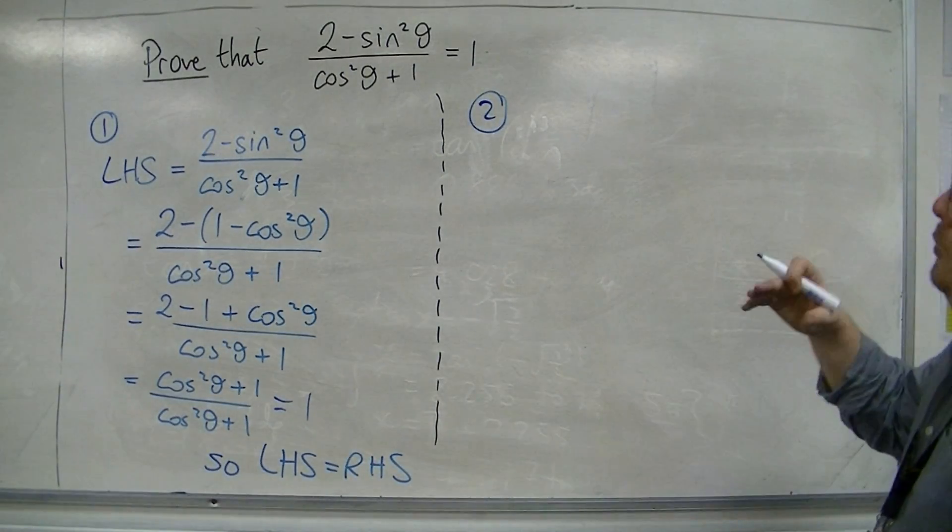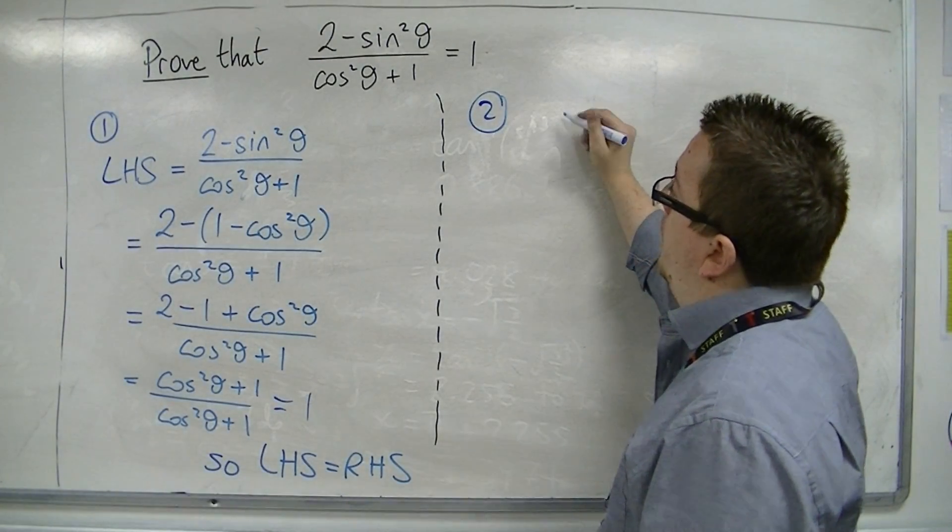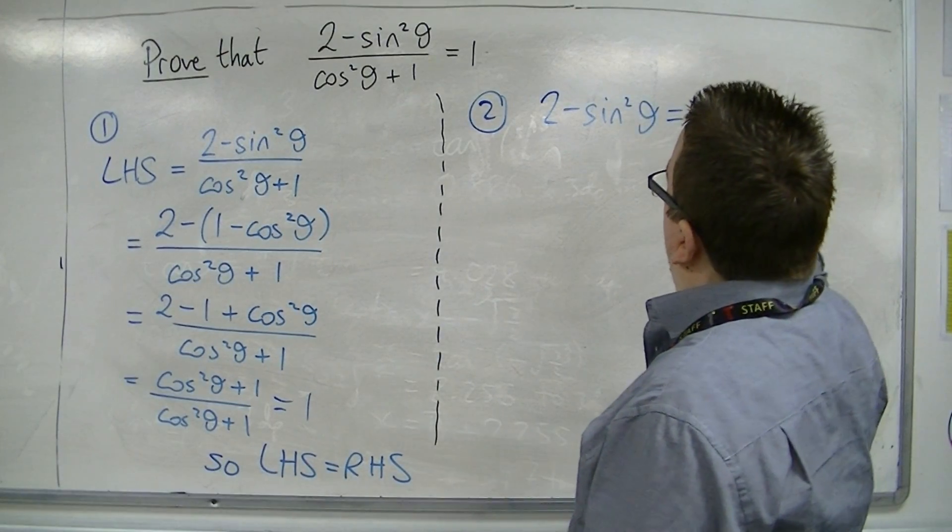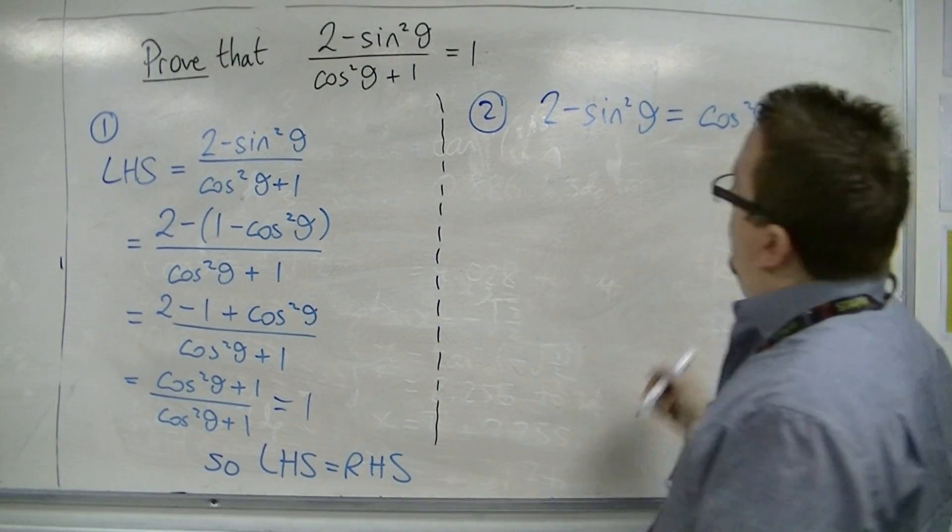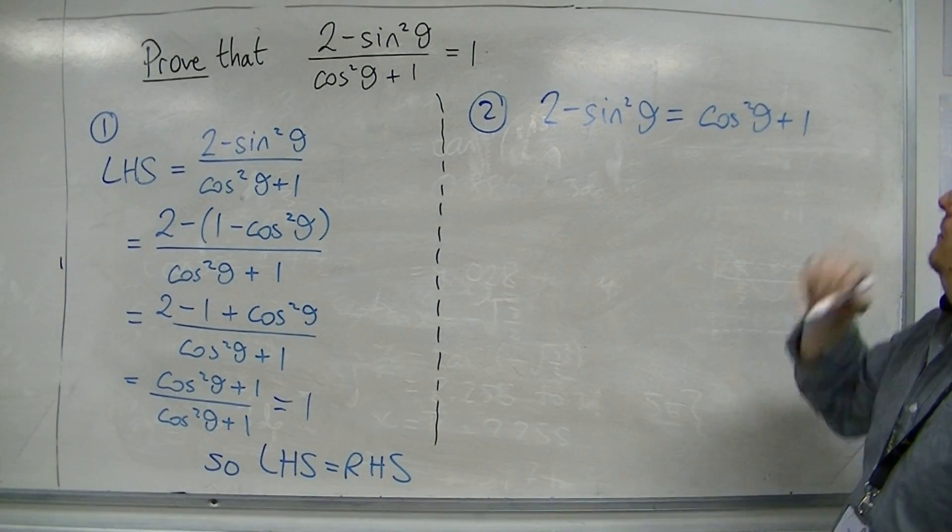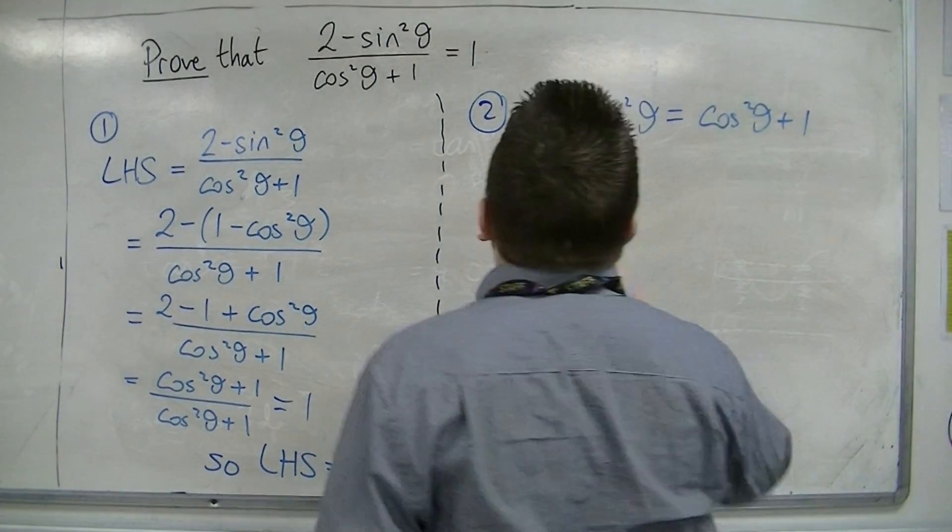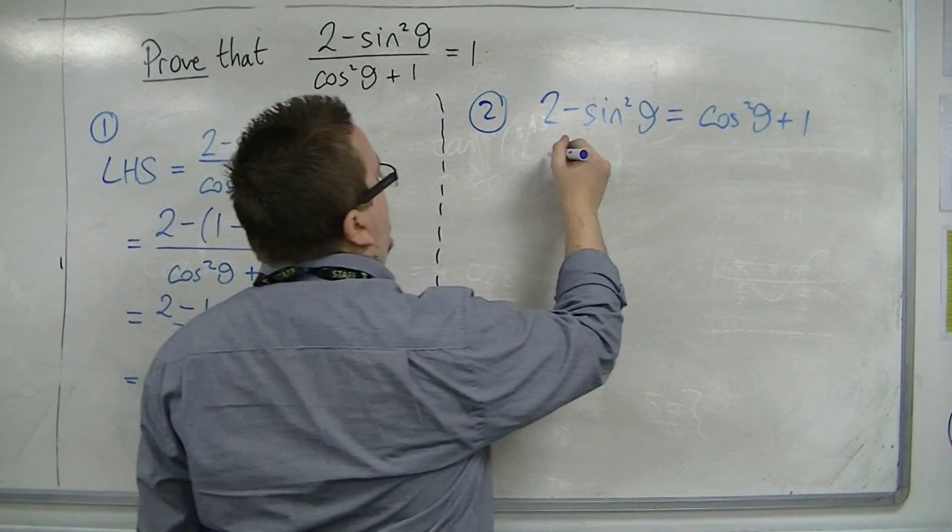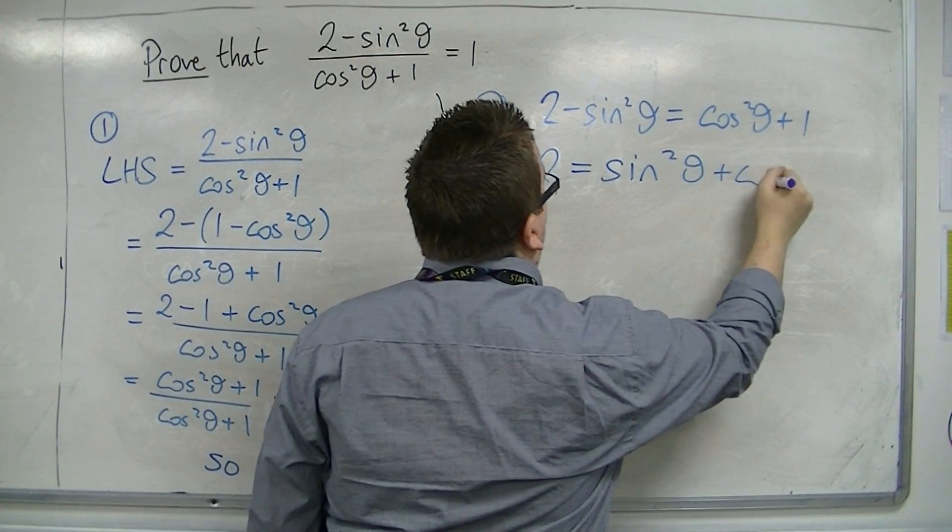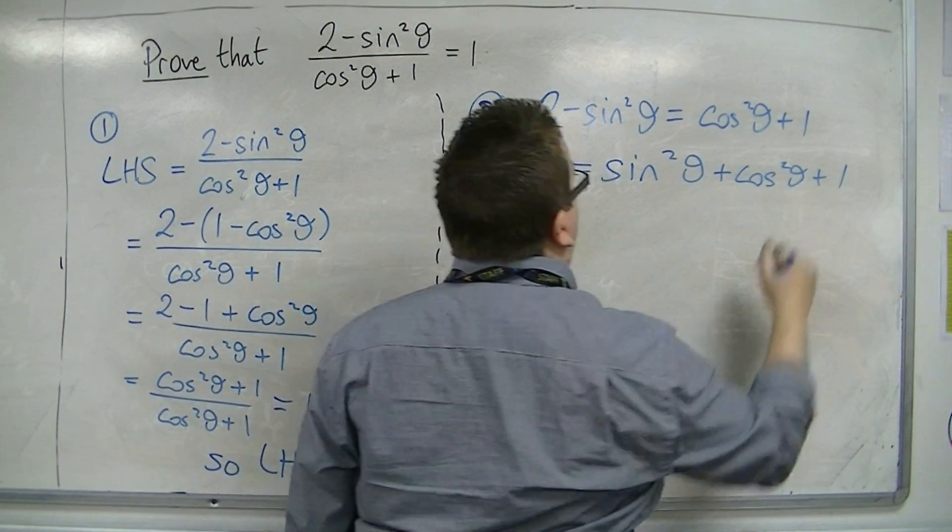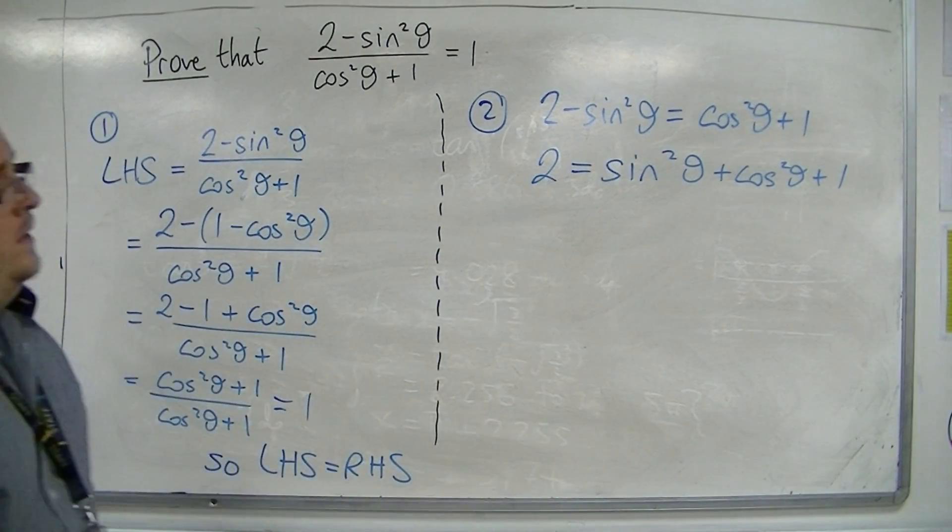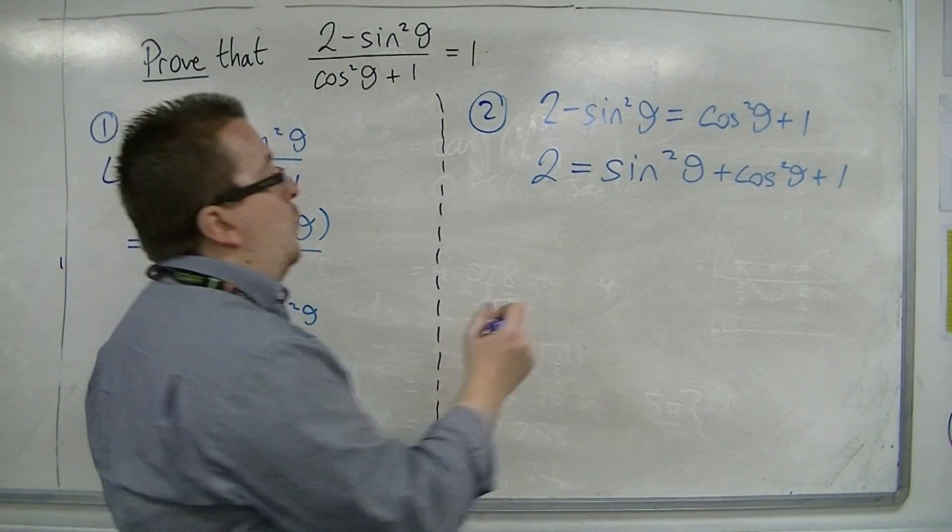And if I multiply both sides by cos squared plus 1, then I get 2 minus sin squared is equal to cos squared plus 1. So, if I then add sin squared to both sides, I get 2 equals sin squared plus cos squared plus 1. And then I can take 1 away from both sides.